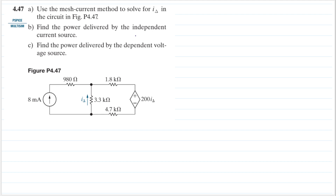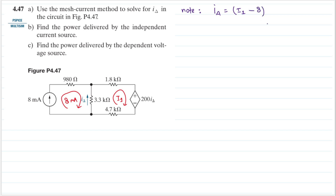Let's set our loop here. We know that this loop is exactly the same as this current source, so this is 8 milliampere. Let's name this loop as i1. Now let's take a note about i_delta: i_delta is equal to i1 because it is in the same direction, and then minus 8 milliampere, so i_delta equals i1 minus 8.